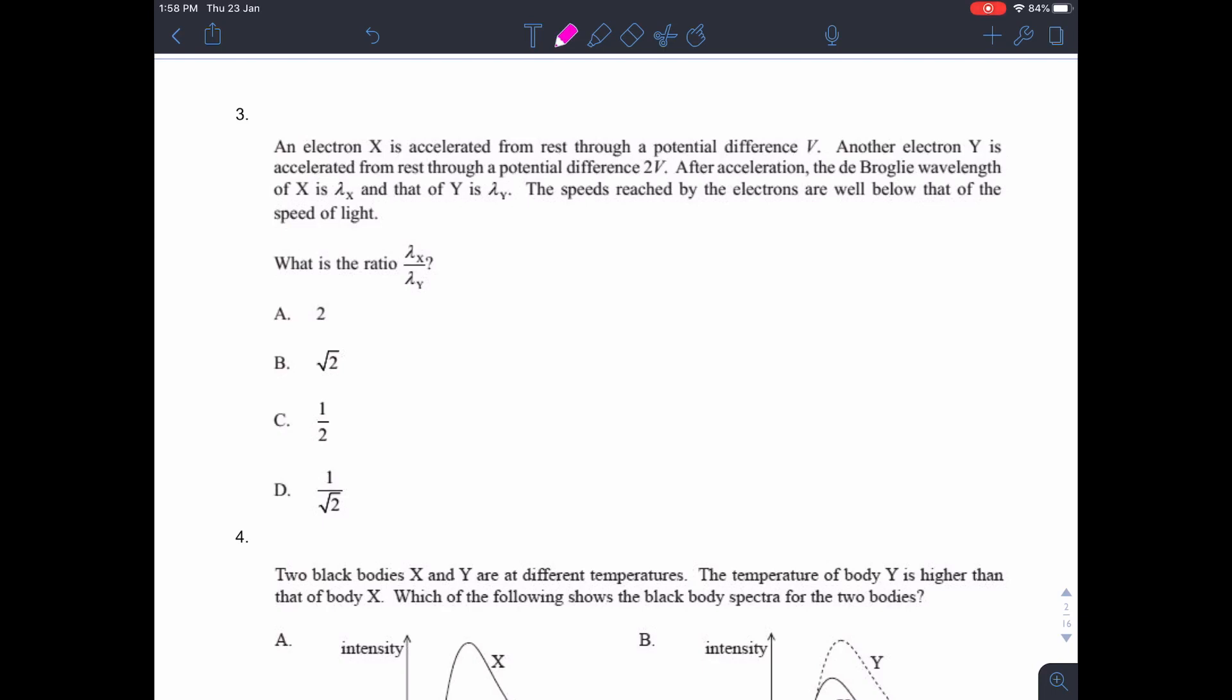Question 3. An electron X is accelerated from rest through a potential difference V. Another electron Y is accelerated through a potential difference 2V. After acceleration, these are the de Broglie wavelengths. The speeds reached by the electrons are well below that of the speed of light. So we want the ratio of the two de Broglie wavelengths of those two electrons.